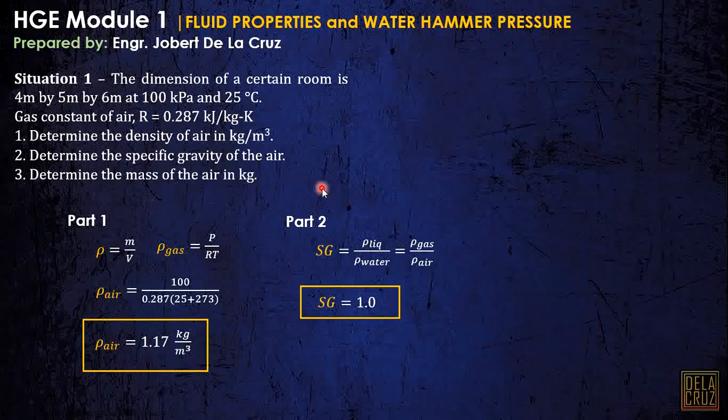For number 3, determine the mass of the air in kilograms. We need to calculate the mass using this formula. Since we have the rho of the air, we have the volume here. The volume here is just the volume of this dimension of the room. Ito yung in-occupy ng air natin dito. Substitute: mass over the volume, that is 4 by 5 by 6, and we have the mass here. Very basic lang ito.